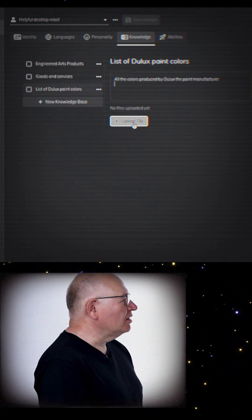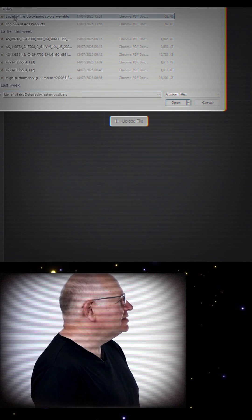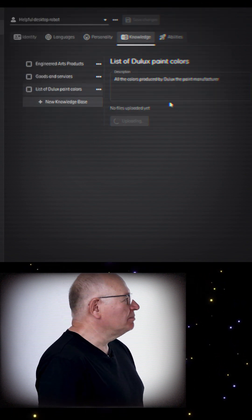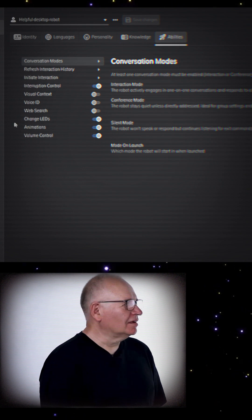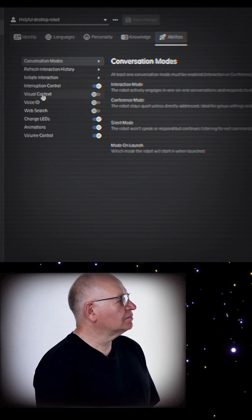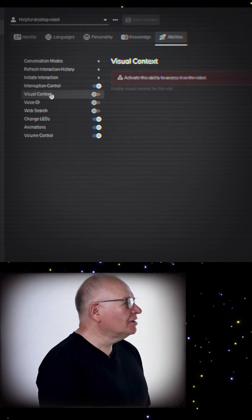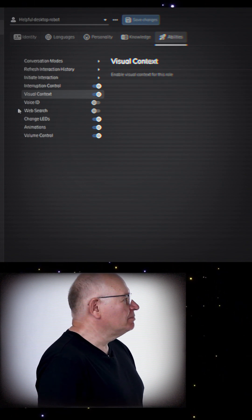I'll add some specialist knowledge. This list of paint colors should help. Now I'm going to enable some special abilities. Vision is a must for a paint salesperson. And remembering a customer by the sound of their voice is a big plus. I'll switch on those features.